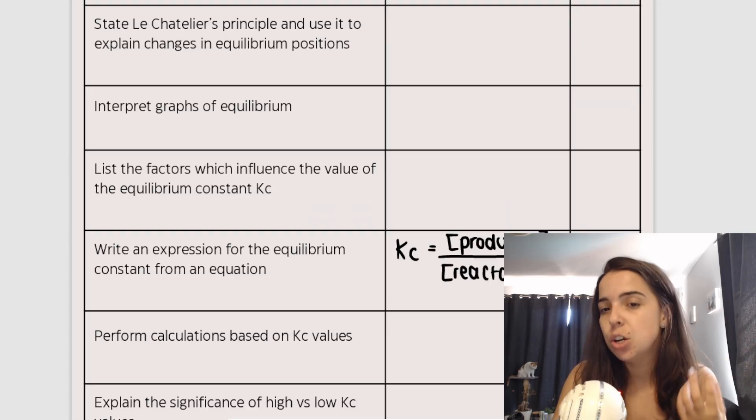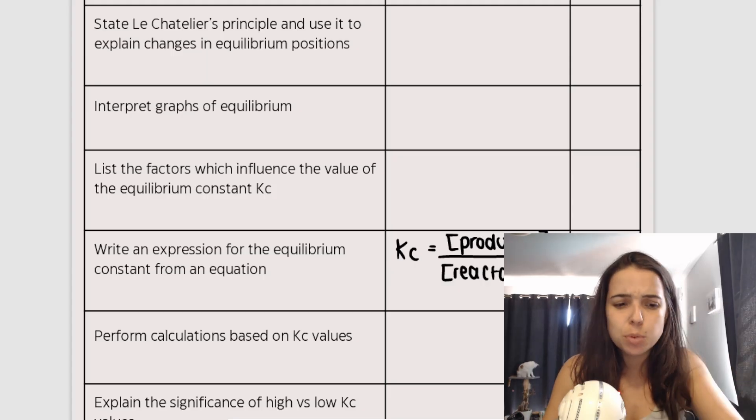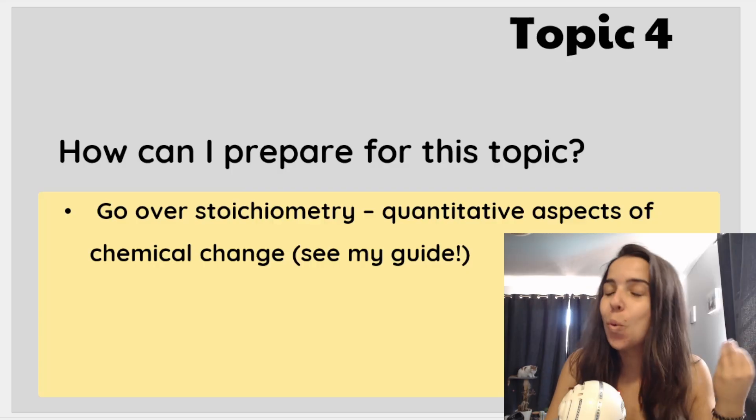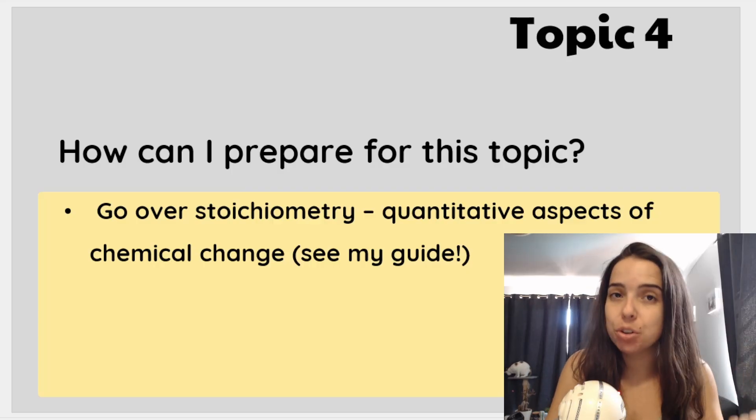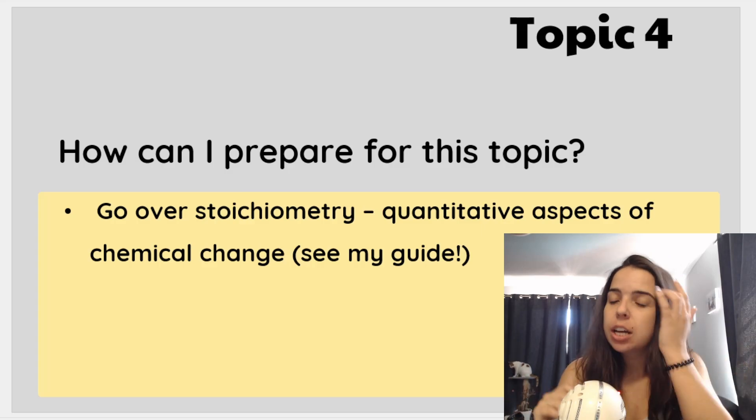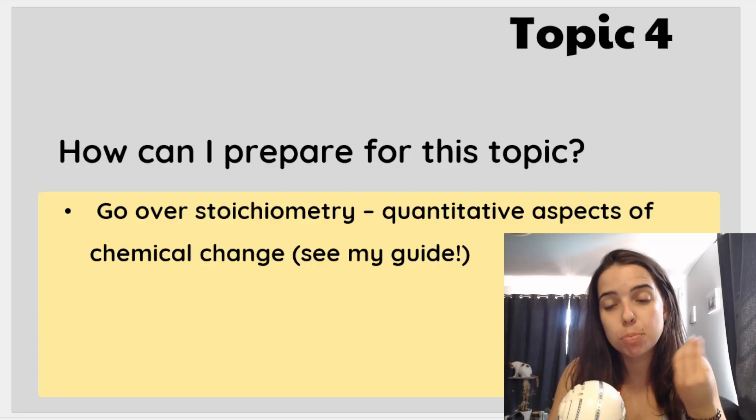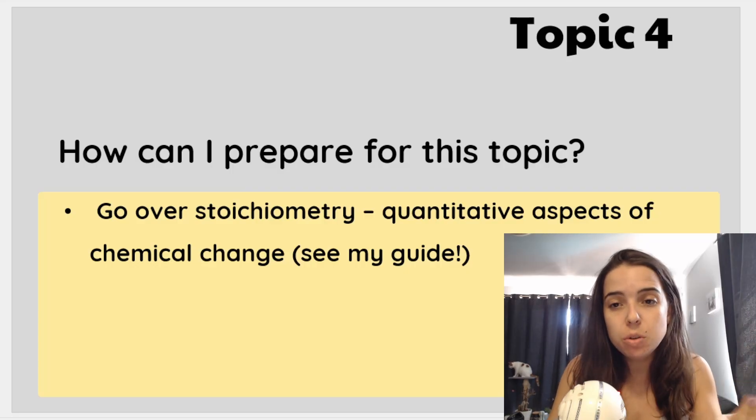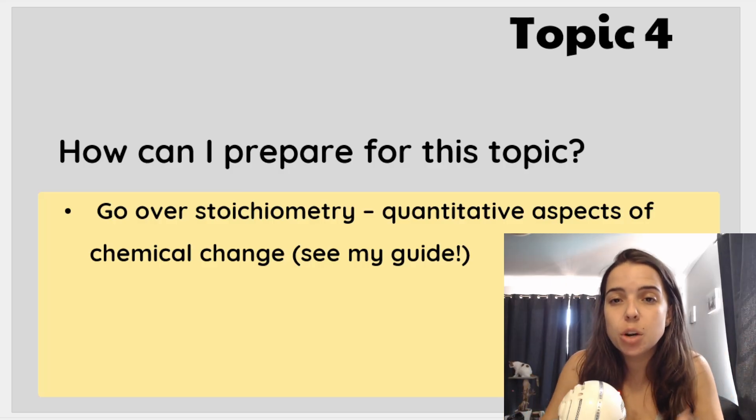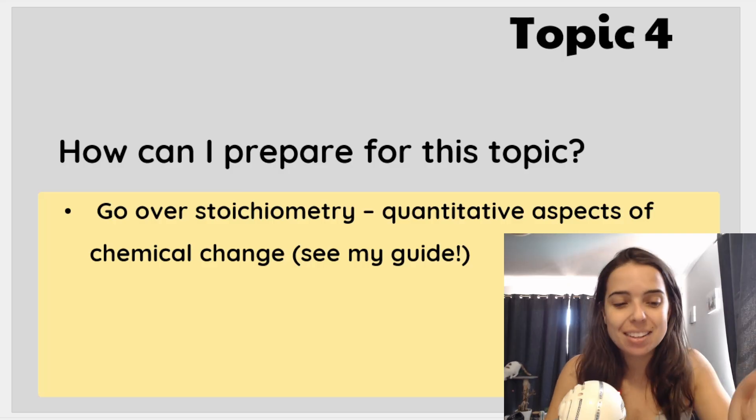Of course I'll be posting videos on this, so subscribe if you haven't already. But how can you prepare for this one? Because it's a relatively new topic, what you can do once again is go over stoichiometry, which is also called the quantitative aspects of chemical change. Again, I have videos on it. It's all about practice. You have to practice. You have to perfect this because if you can do this, then learning the new concepts and topics within this section will be easy. But you can see my guide if you need more help on that.